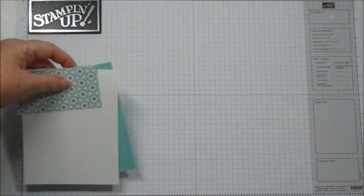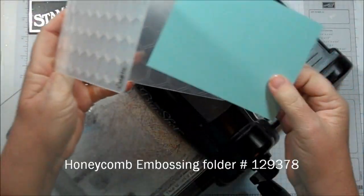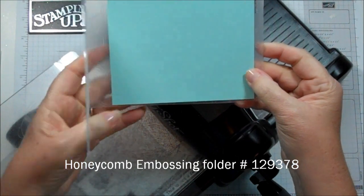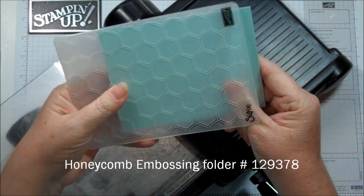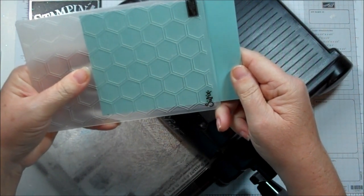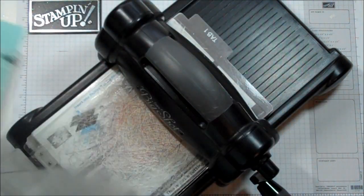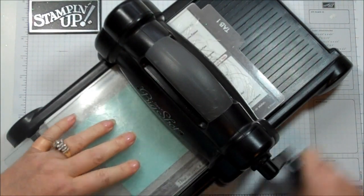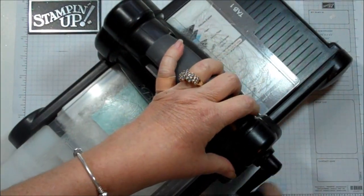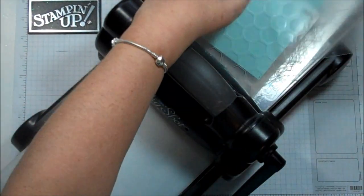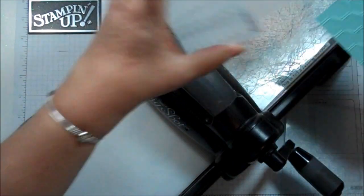So we're going to use the Big Shot, so let me grab that. Okay, so we're going to emboss with the Honeycomb Embossing Folder. We're going to use the Pool Party, and I just want about 3/4 of the cardstock embossed. Just going to emboss that really quick. Cute.